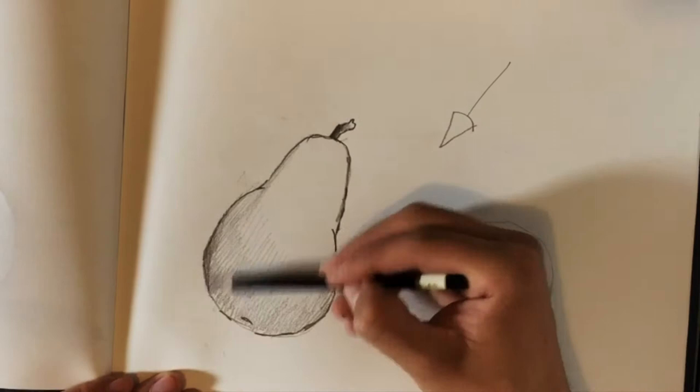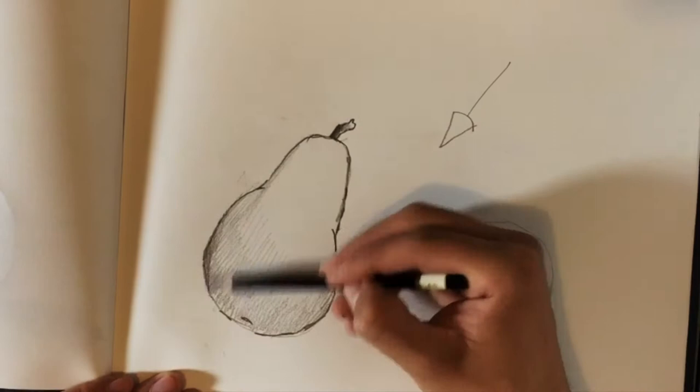I draw the shadows of the pear with a 4B pencil and I want to make the shadows go to the bottom left. Then I continue drawing the drop shadow.